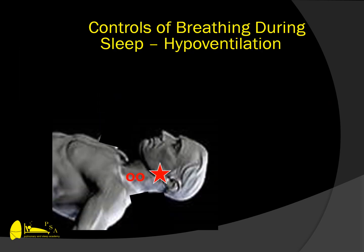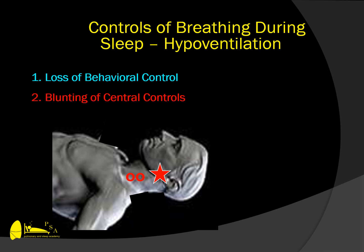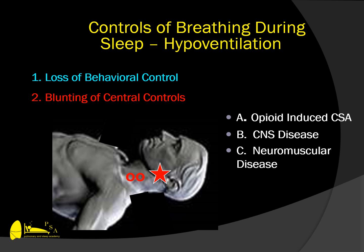It is important to consider that central sleep apnea can occur because of either hypoventilation or hyperventilation. In considering hypoventilation, we have lost our behavioral control, and blunting of the central controls can result from conditions such as the use of opiates, central nervous system disease, as well as neuromuscular disease, which can lead to hypoventilation and central apnea or central hypopnea.